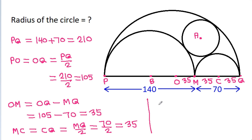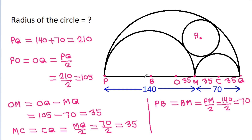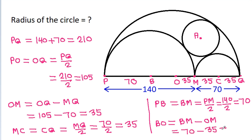PB equals BM, which equals PM divided by 2. That is 140 by 2, which is 70. So PB is 70. And BO equals BM minus OM, which is 70 minus 35, that is 35. So BO is 35.